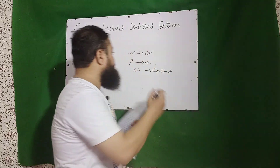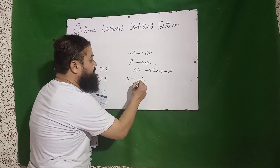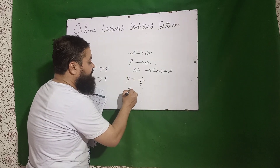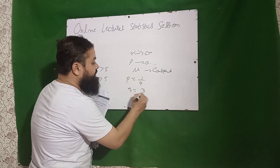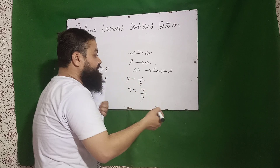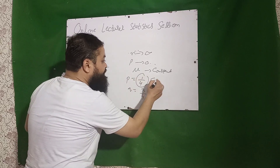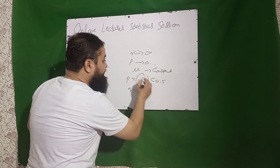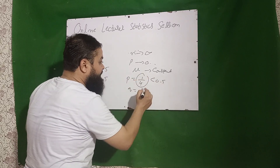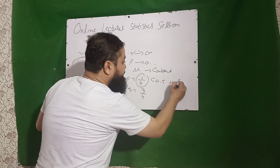Next question: if P is equal to 1/4 and Q is equal to 3/4, what do you say about the binomial distribution? Since P is less than 0.5 (it is 0.25), the distribution is positively skewed.